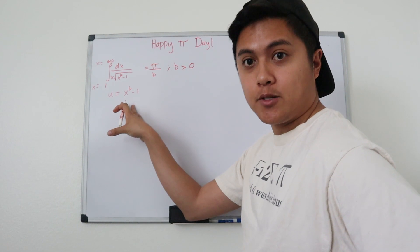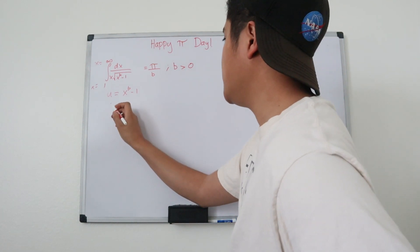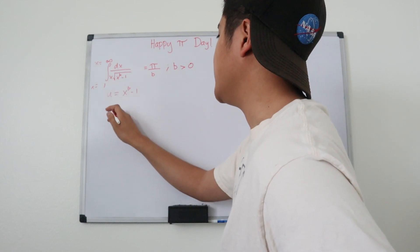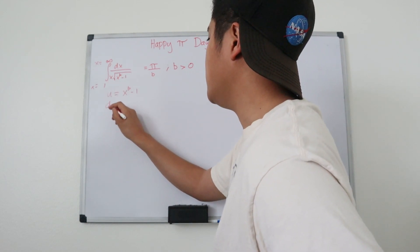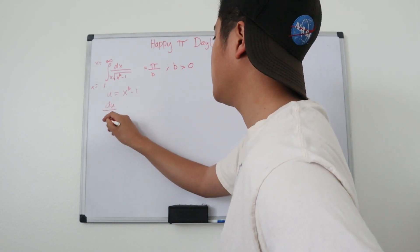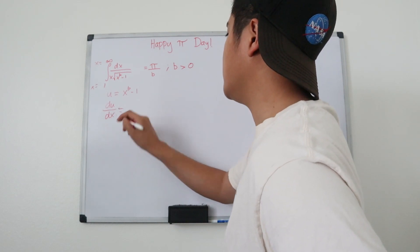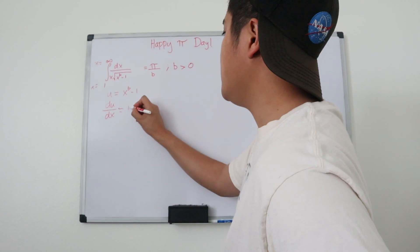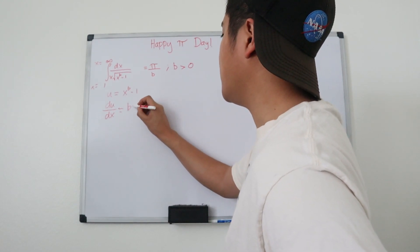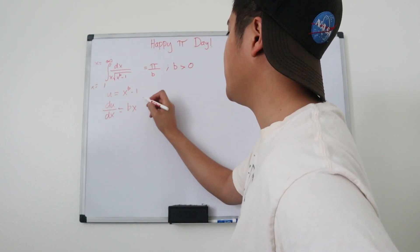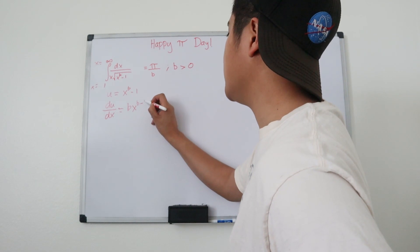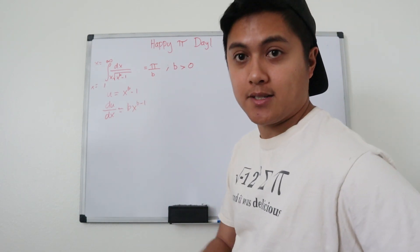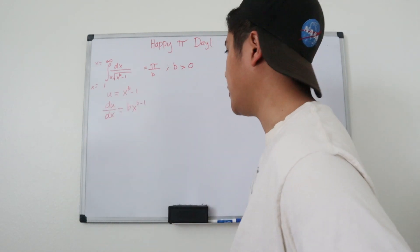We have u equal to x to the b minus 1, and we're going to take the derivative of u because we want to rewrite the entire integral, so we need a differential. So du/dx — using the power rule, that's equal to b times x to the b minus 1. The derivative of the constant minus 1 is just 0, so that goes away.